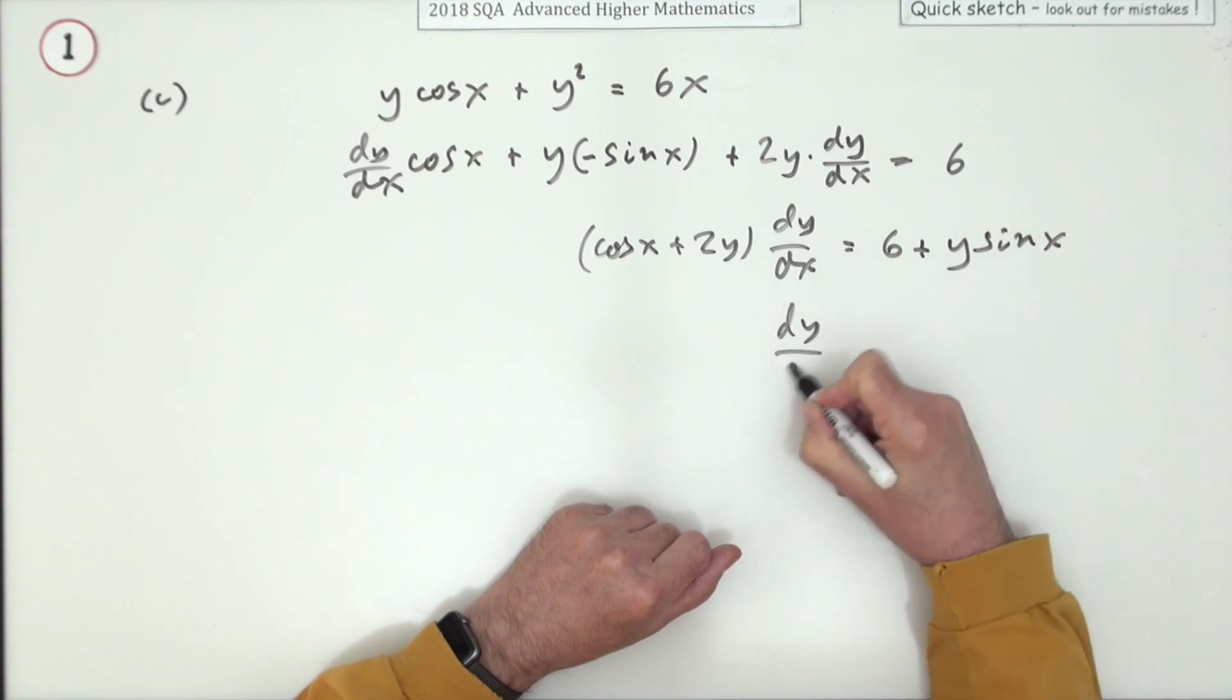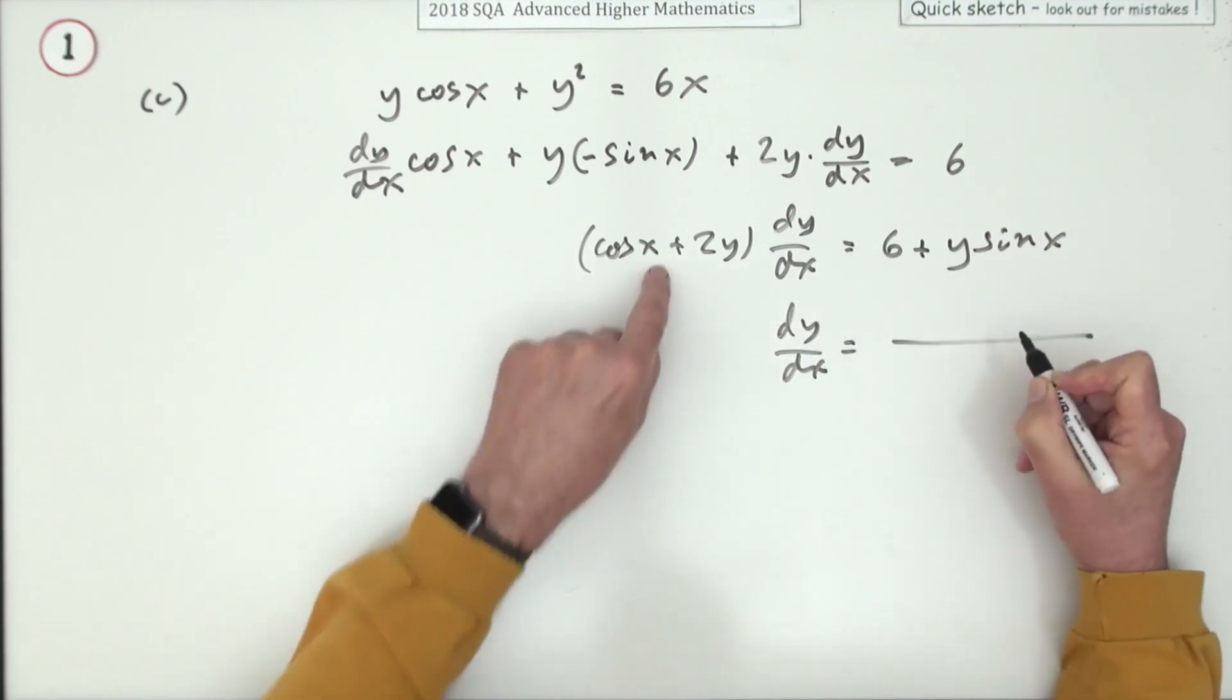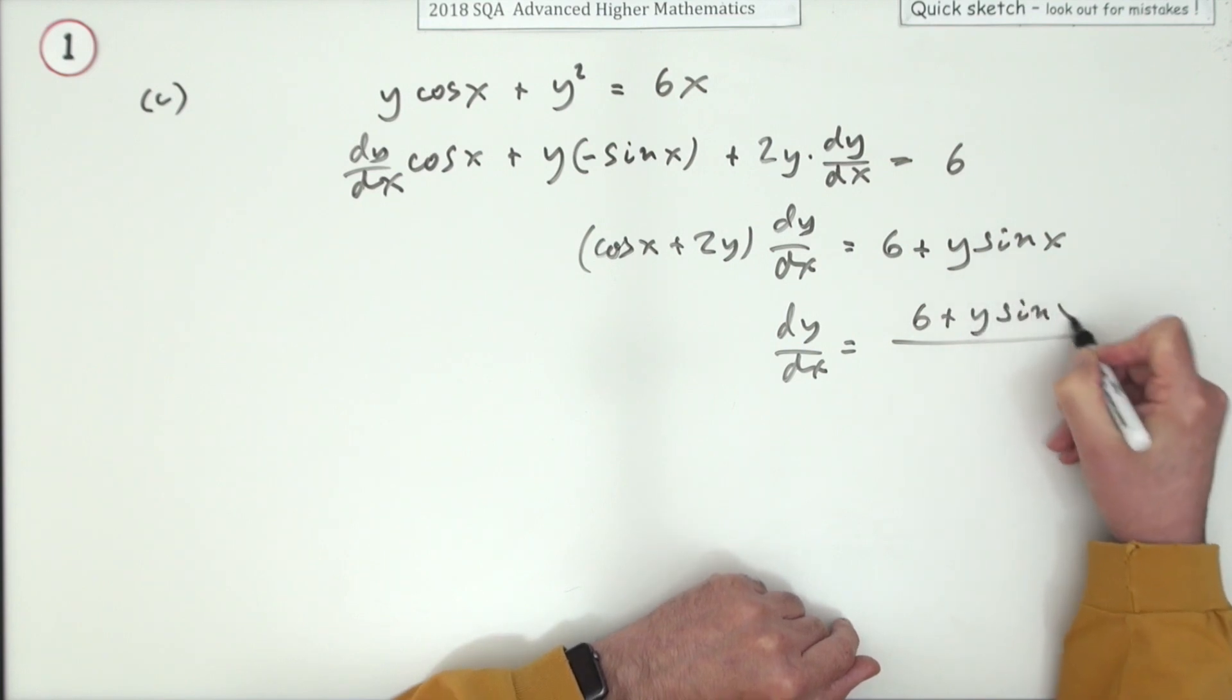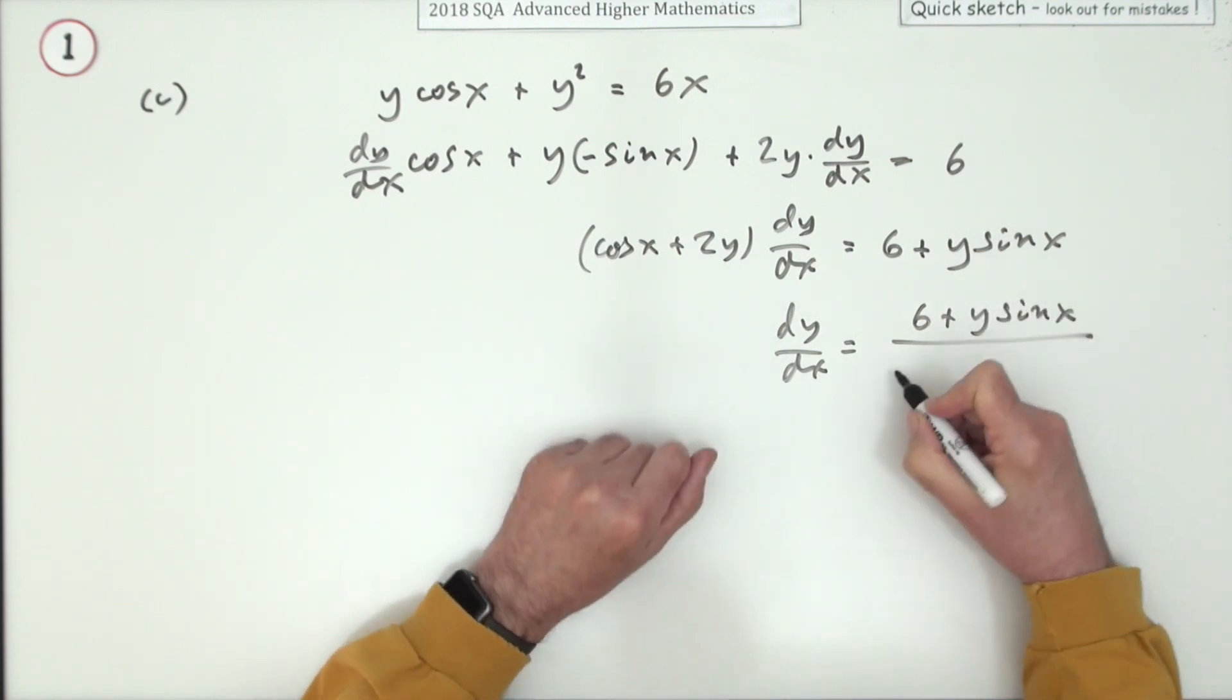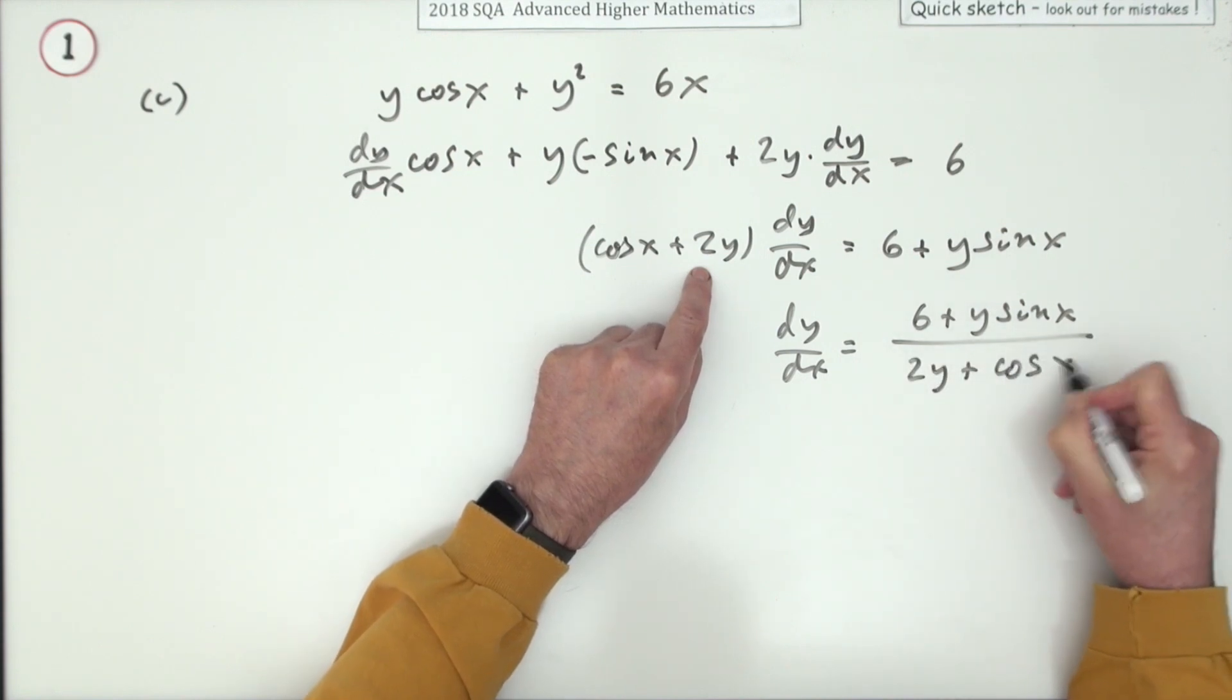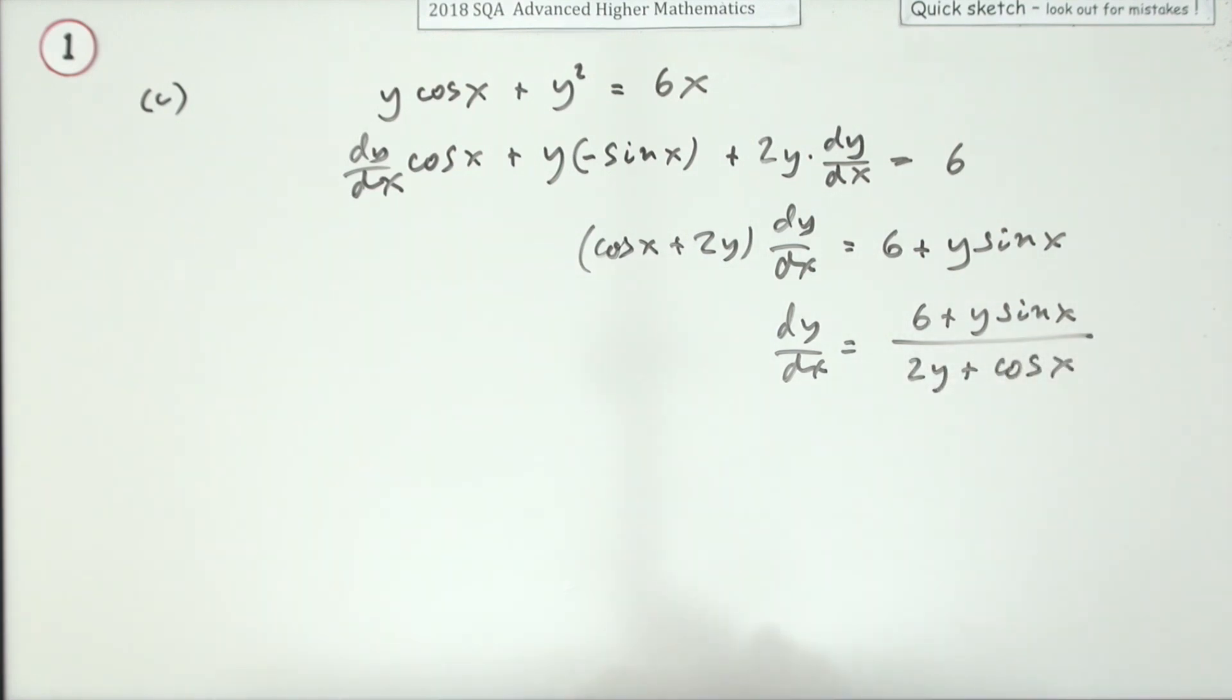Now finally to get dy/dx, take this across and divide: 6 plus y sin x, and maybe I'll keep it in the same order so the trig times second: 2y plus cos x. And there we go, it's done.